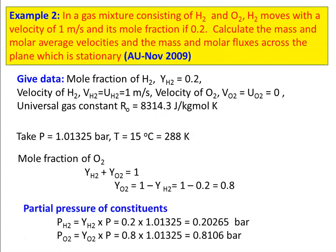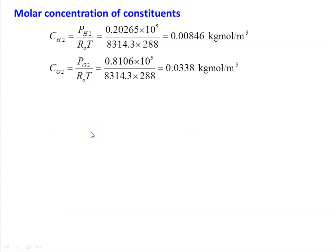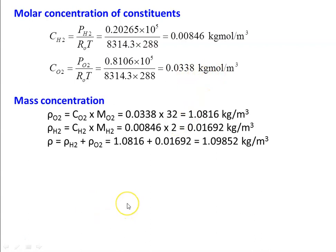Partial pressure of constituents: PH2 = YH2 × P = 0.20265 bar. PO2 = YO2 × P = 0.8106 bar. Molar concentration: CH2 = PH2/(R0×T) = 0.20265×10⁵/(8314.3×288) = 0.00846 kg·mol/m³. CO2 = PO2/(R0×T) = 0.8106×10⁵/(8314.3×288) = 0.0338 kg·mol/m³. Mass concentration: ρO2 = CO2 × molecular weight of O2 = 0.0338 × 32 = 1.0816 kg/m³. ρH2 = CH2 × molecular weight of H2 = 0.00846 × 2 = 0.01692 kg/m³.